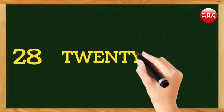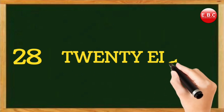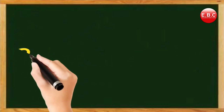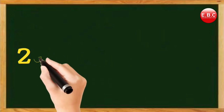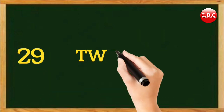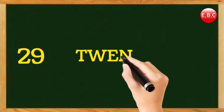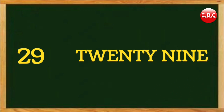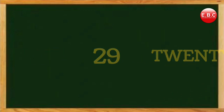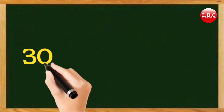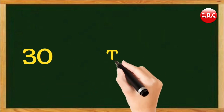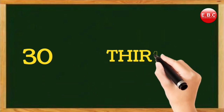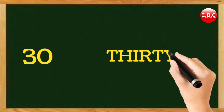27 — T-W-E-N-T-Y, twenty, S-E-V-E-N, seven. 27. 28 — T-W-E-N-T-Y, twenty, E-I-G-H-T, eight. 28. 29 — T-W-E-N-T-Y, twenty, N-I-N-E, nine. 29. 30 — T-H-I-R-T-Y, thirty. 30.